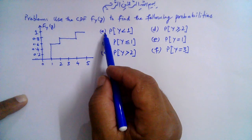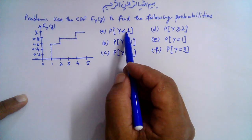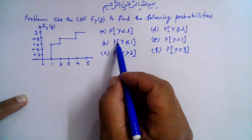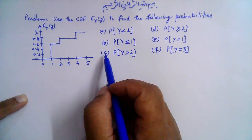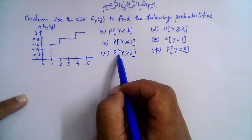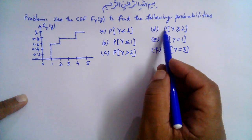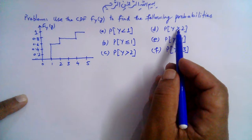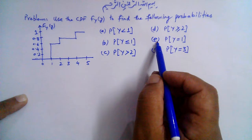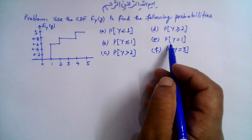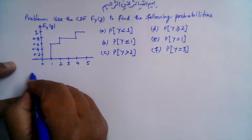Part a: probability that Y is less than 1. Part b: probability that Y is less than or equal to 1. Part c: probability that Y is greater than 2. Part d: probability that Y is greater than or equal to 2. Part e: probability that Y is equal to 1. And Part f: probability that Y is equal to 3.